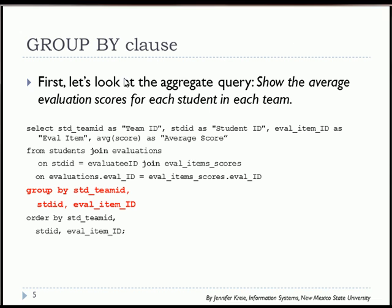So in this SQL statement, I'm looking at team ID, student ID, eval item ID, and then I'm getting the average of the scores.